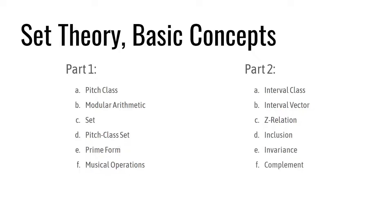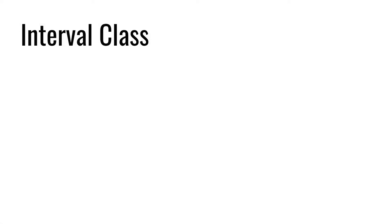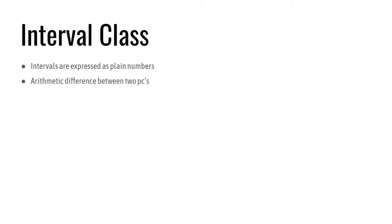I have already explained what pitch class sets are. It turns out that there is another kind of class in set theory: the interval class. As you can imagine, it refers to the interval formed by two elements of a PC set. In set theory, we don't talk about intervals like major, minor, diminished, etc. Intervals are expressed simply as plain numbers. They are the arithmetic difference between two PCs, and only positive values are used. There are 12 intervals, and they are reduced to 6 classes using the same logic as PC sets — that is, considering an interval and its inversion as belonging to the same class. For practical reasons, class 0, the unison, is omitted.